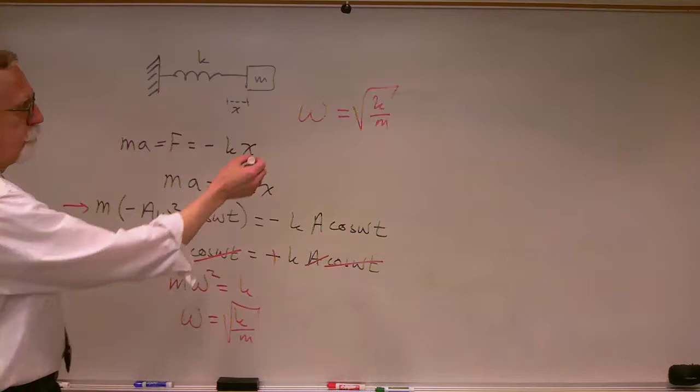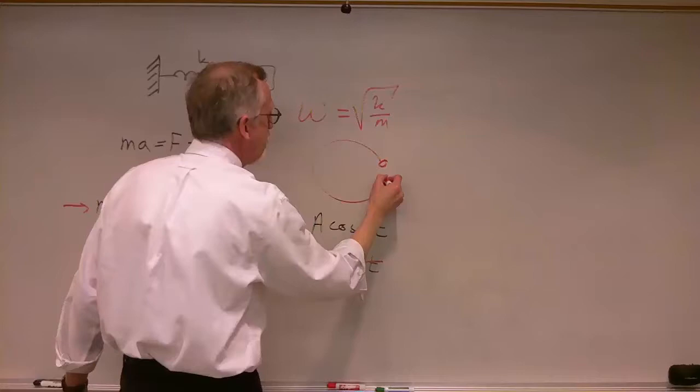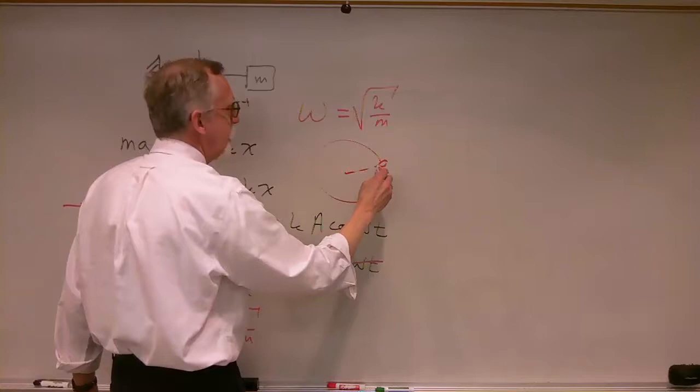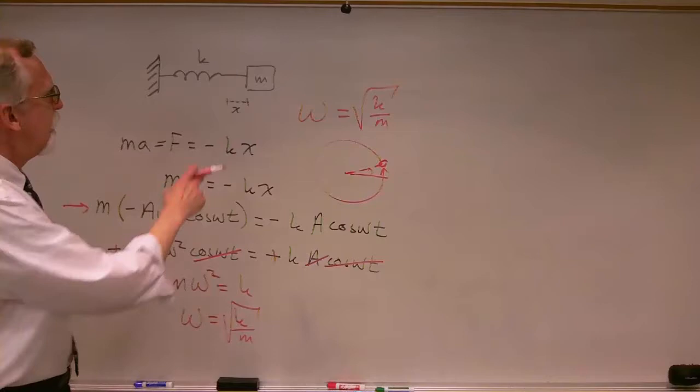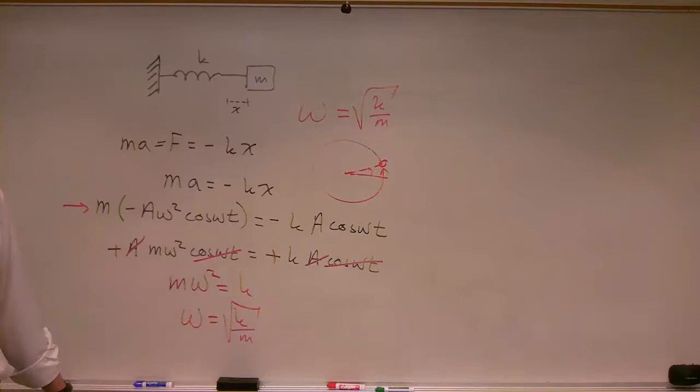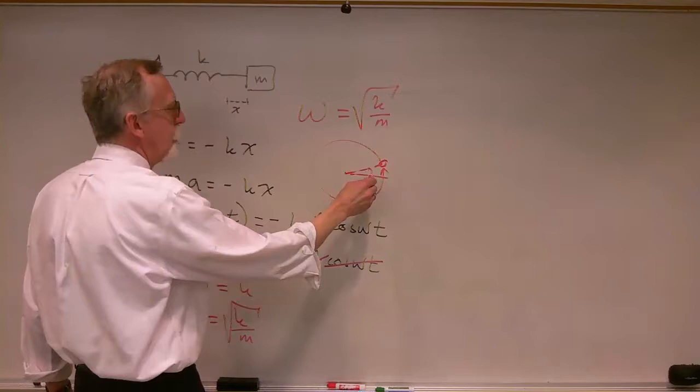Now, I call this an angular velocity. An angular velocity makes sense when we have something going around in a circle — it tells us how many radians per second of angle the thing is rotating through. But there's nothing going around in a circle when we're talking about a mass on a spring.